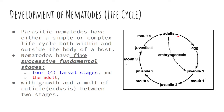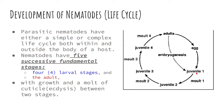Take note that not all nematodes produce eggs first — some go from adult directly to the larval stage through embryogenesis. Commonly, nematodes lay eggs or ova before reaching larval stages, but there are exceptions where the adult releases larvae directly instead of eggs.